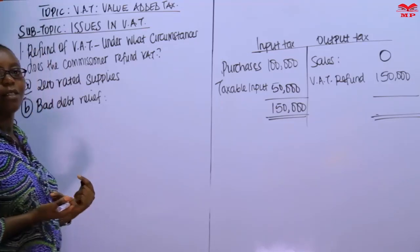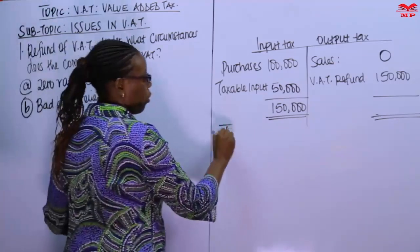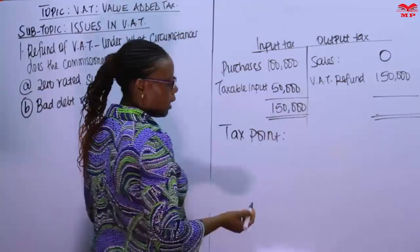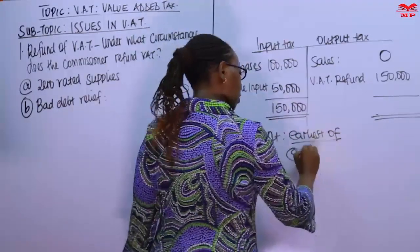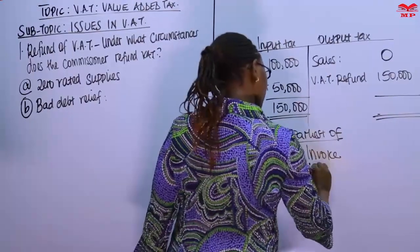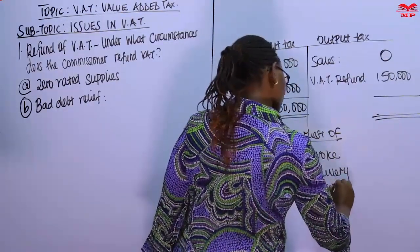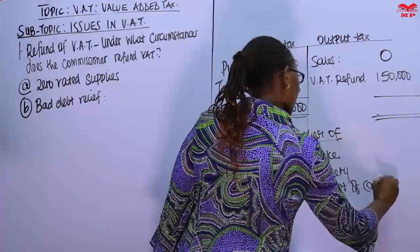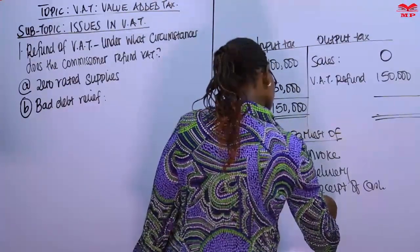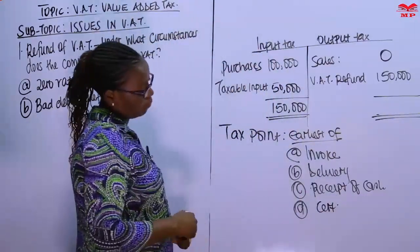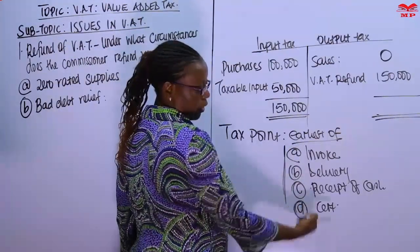This arises because the tax point — the point at which tax becomes due and payable — is the earliest of: one, the date of the invoice; two, the date of delivery; three, the date when you receive cash, whether in full or partial payment; and four, in the case of constructions, when you receive a certificate from an architect.